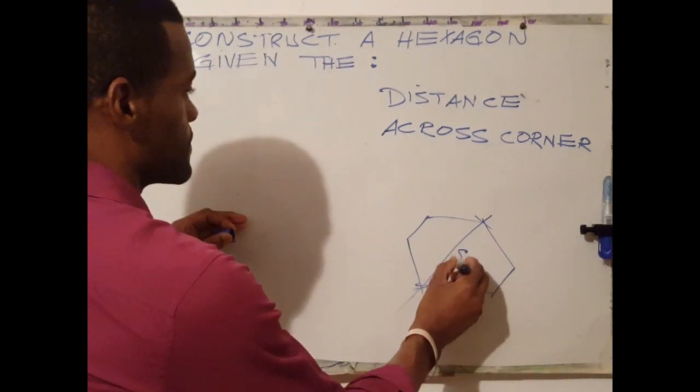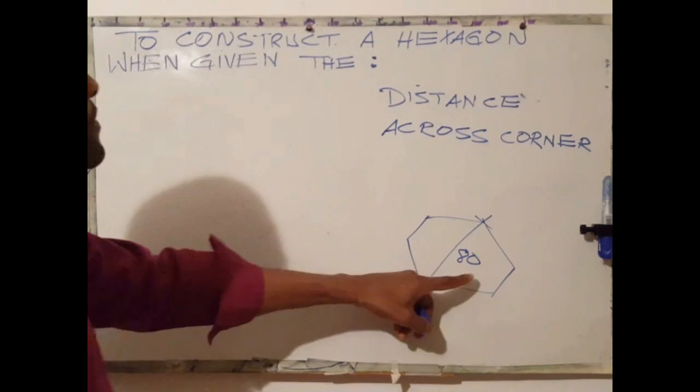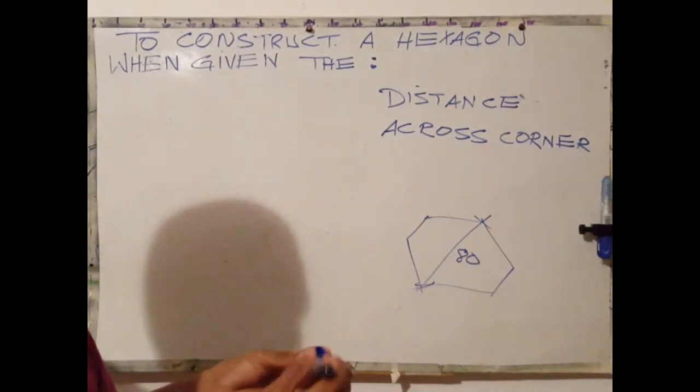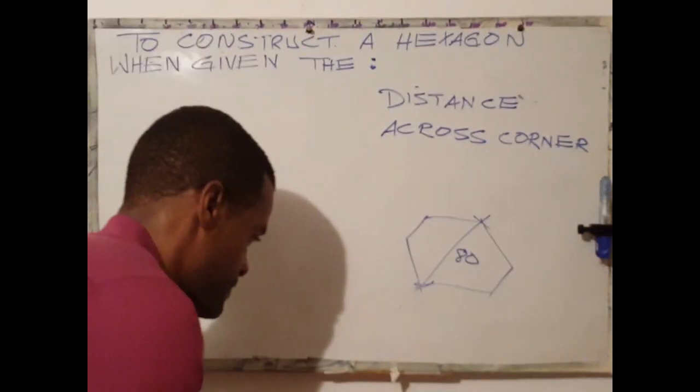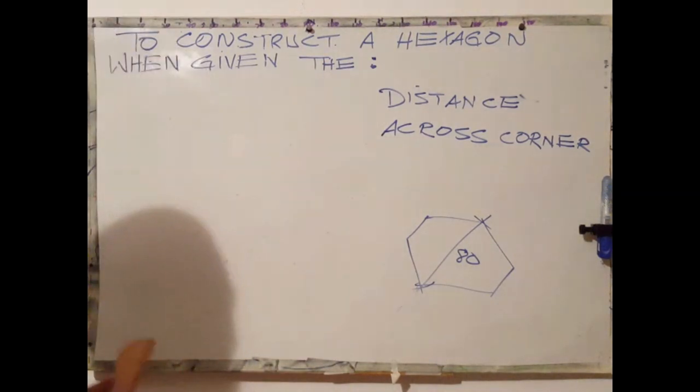A graphic representation of a hexagon which has a distance adjacent from one corner to the other, 80 millimeters.